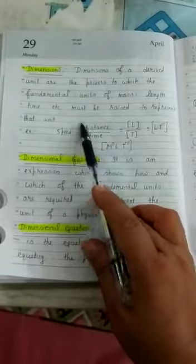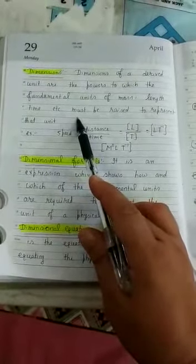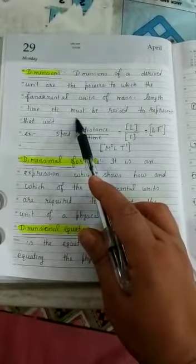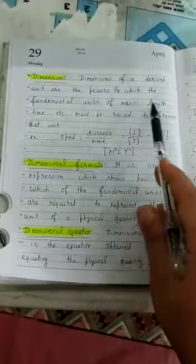We are taking the basic units like mass, length, time, etc. More can be there, like electric current and intensity. But generally we use these three: mass, length, and time.